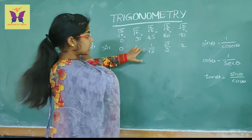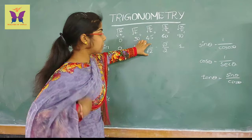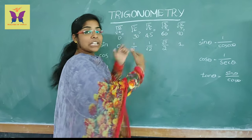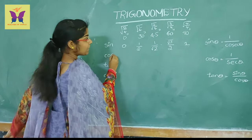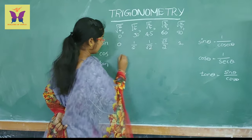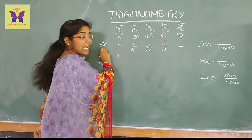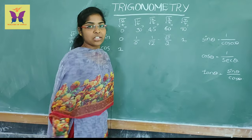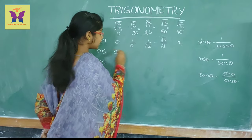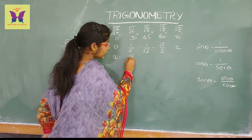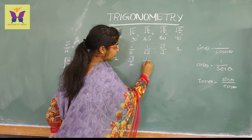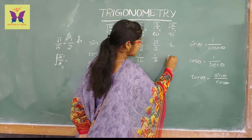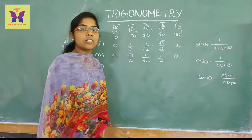If you do this, you will see the cos values are the reverse: 1, root 3 by 2, 1 by root 2, 1 by 2, and 0. So cos 0 equals 1, cos 30 equals root 3 by 2, cos 45 equals 1 by root 2, cos 60 equals 1 by 2, and cos 90 equals 0.